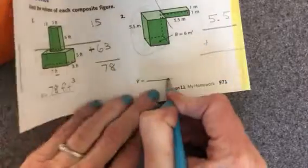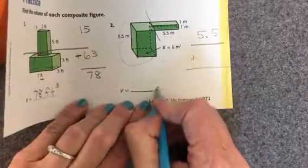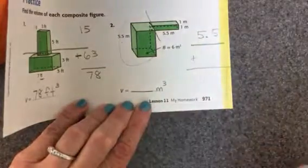Once you add them together, write your answer here. And then we can see that these are measured in cubic meters. So you'll write M and then your 3 here at the end. All right, let's look at the back.